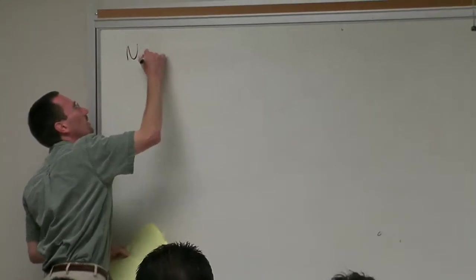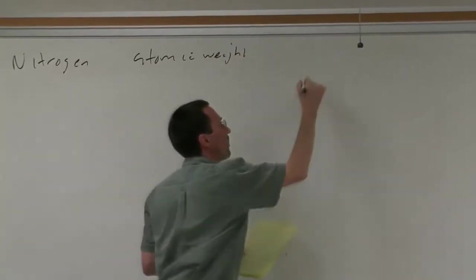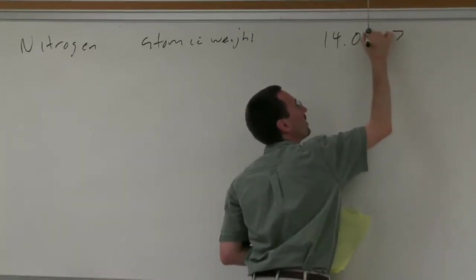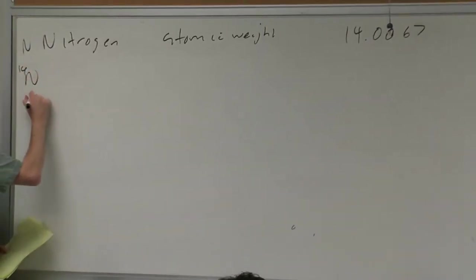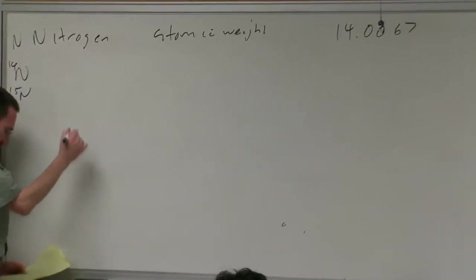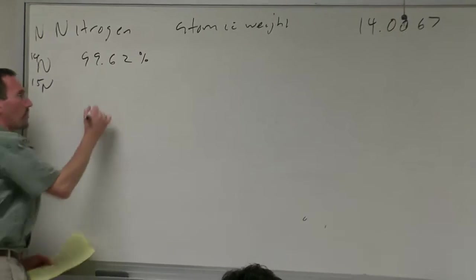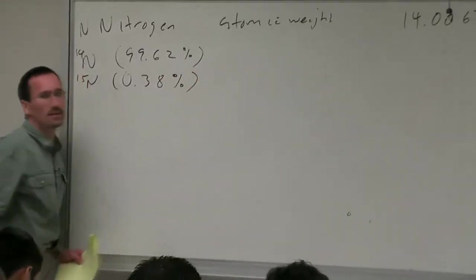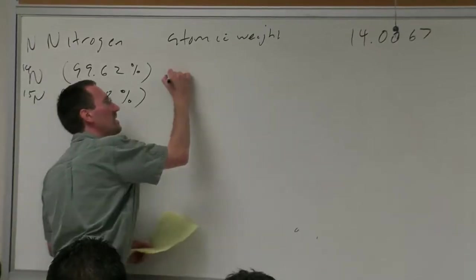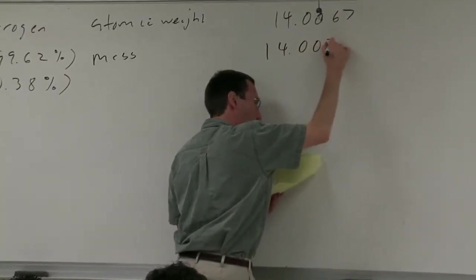When you're thinking about mass spectrometry you want to use the mass of H1, which is 1.00783. Nitrogen, the atomic weight is 14.0067, and yet nitrogen is a mixture of N14 and N15. It's 99.62% N14 and 0.38% N15, and the atomic mass of N14 is 14.00307.